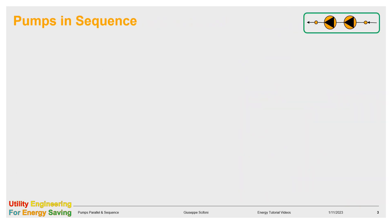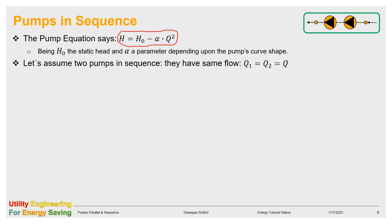Let's start from the sequence operation. The equation of the centrifugal pump says the head as a quadratic function of the flow, being a descending parabola. This function depends upon two parameters: the static head H₀, that is the head at zero flow, and the curve shape α. Those parameters are given. We will see later on that α can be experimentally found.